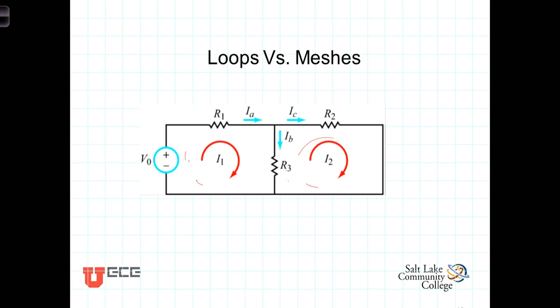Let's also make the distinction between branch currents and mesh currents. As we know, a branch current is the current flowing in any single branch of a circuit. This circuit has three different branches: there's this branch here I sub A, this branch here that has the current defined I sub B, and this branch here that has the current I sub C.